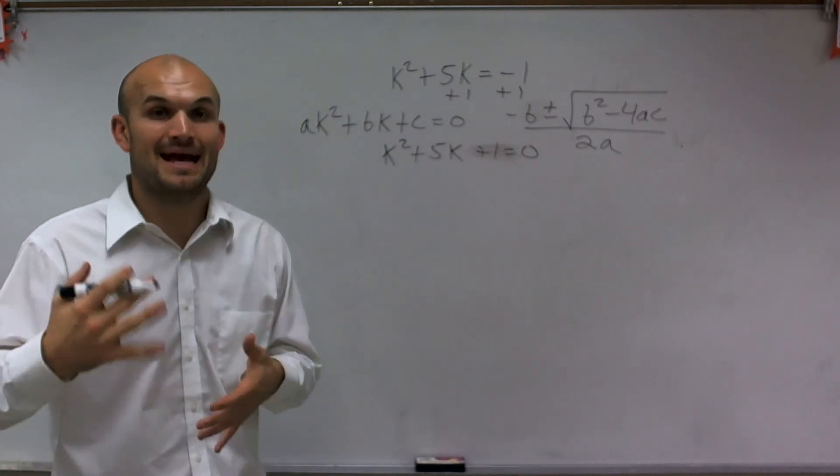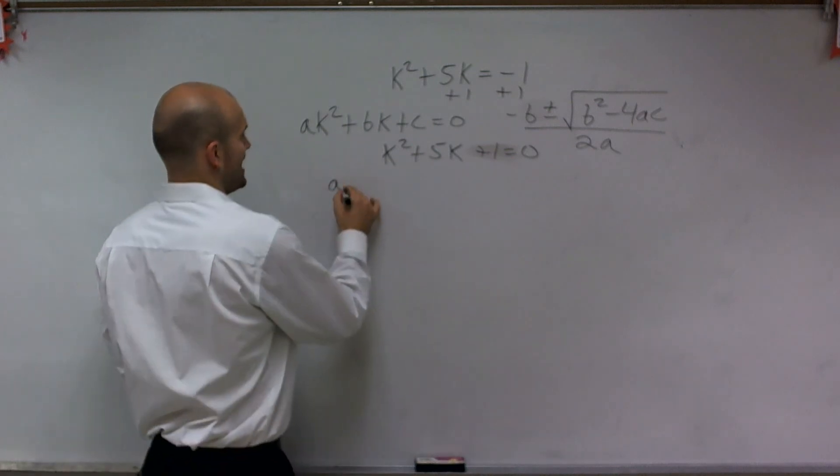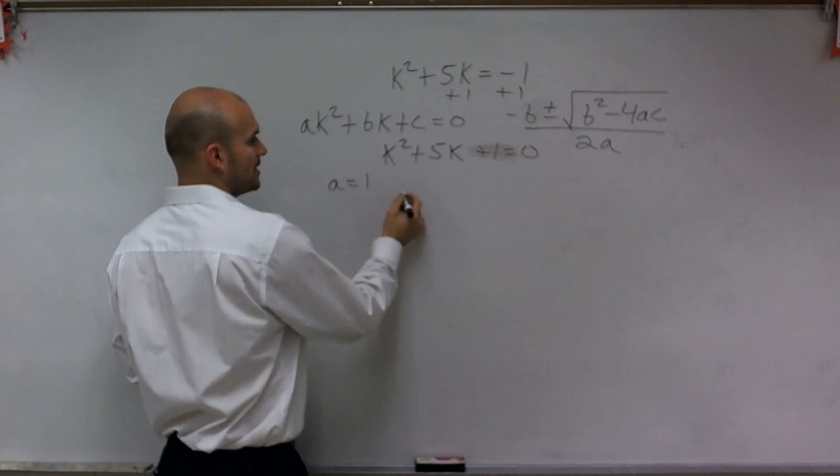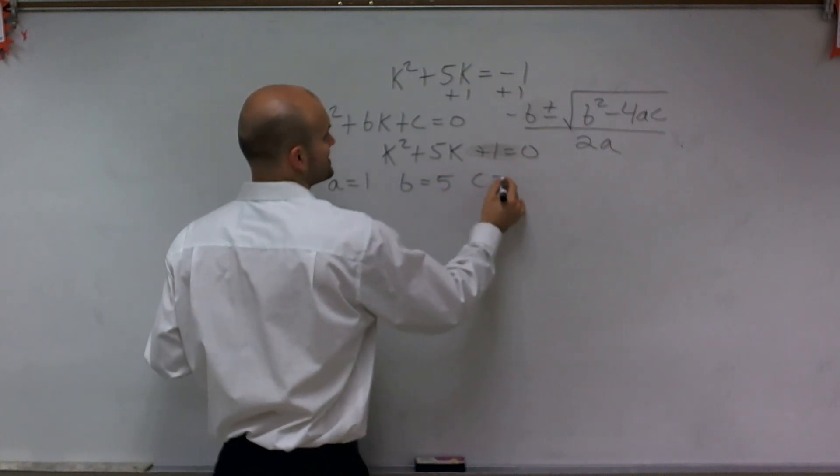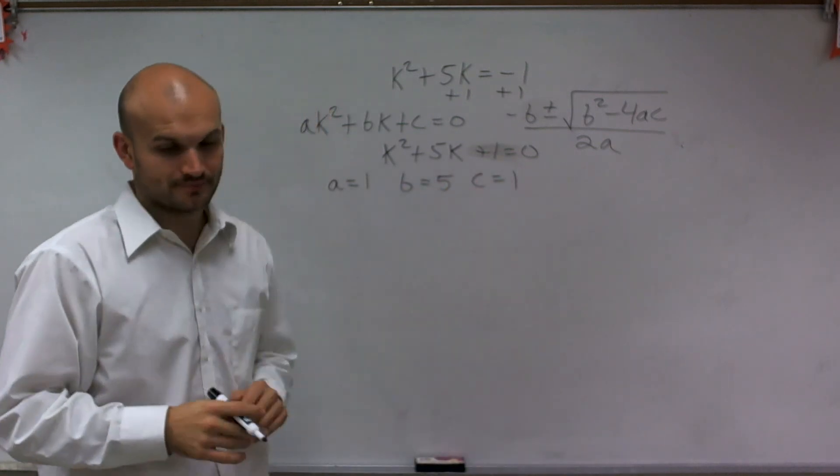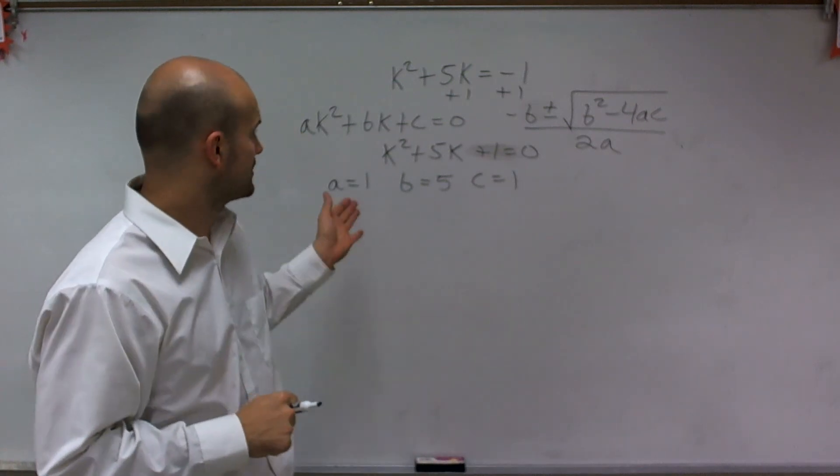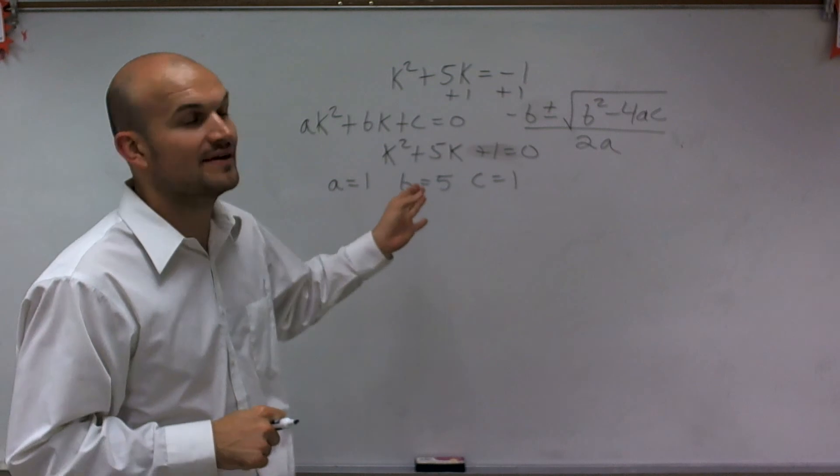Now I need to label my a, b, and c. So a in this formula is 1, because 1 would be the coefficient of k squared, b is equal to 5, and c is also equal to 1. So now what we're going to do, I have a equals 1, b equals 5, and c equals 1.